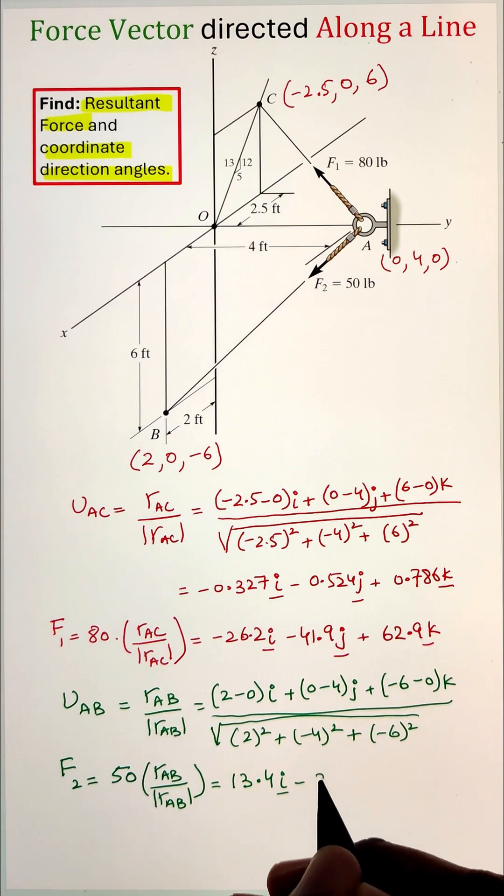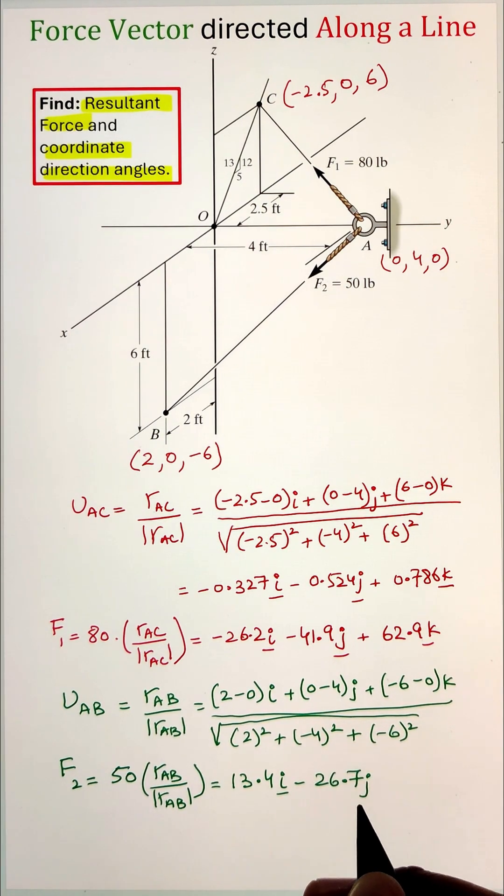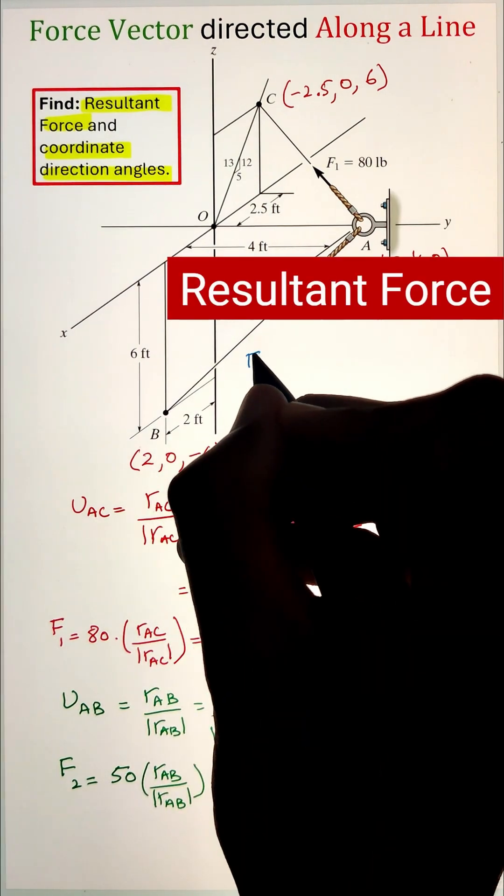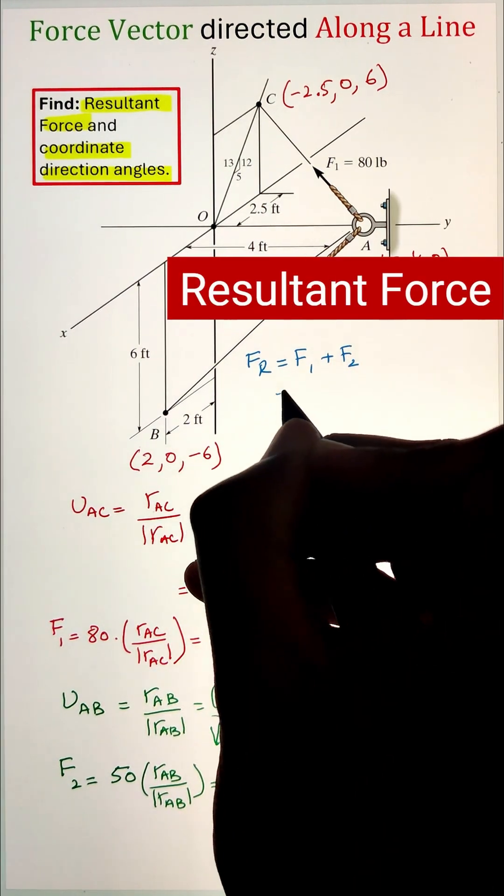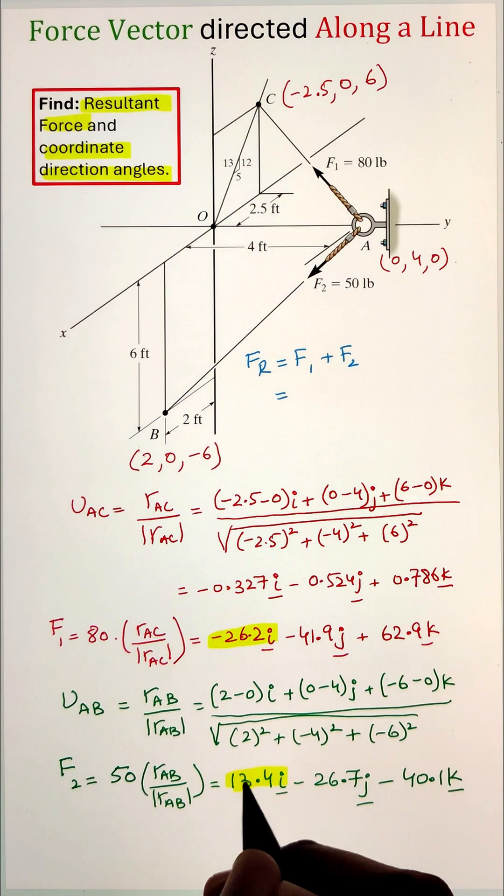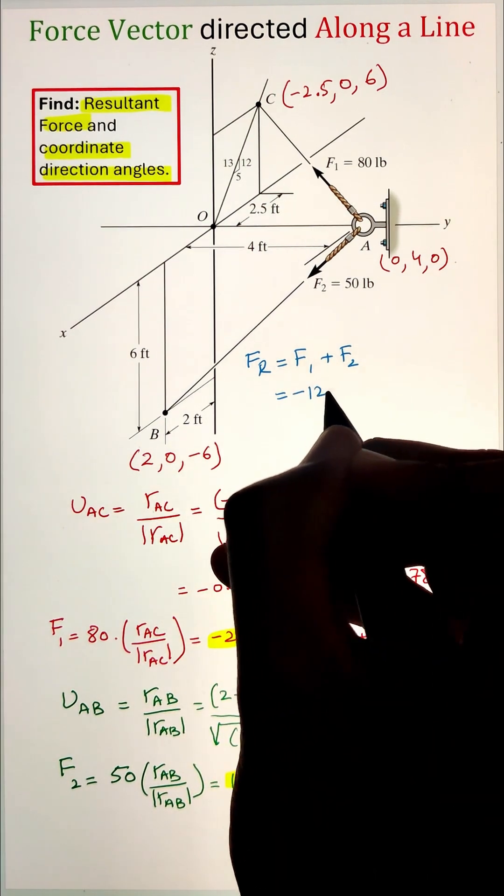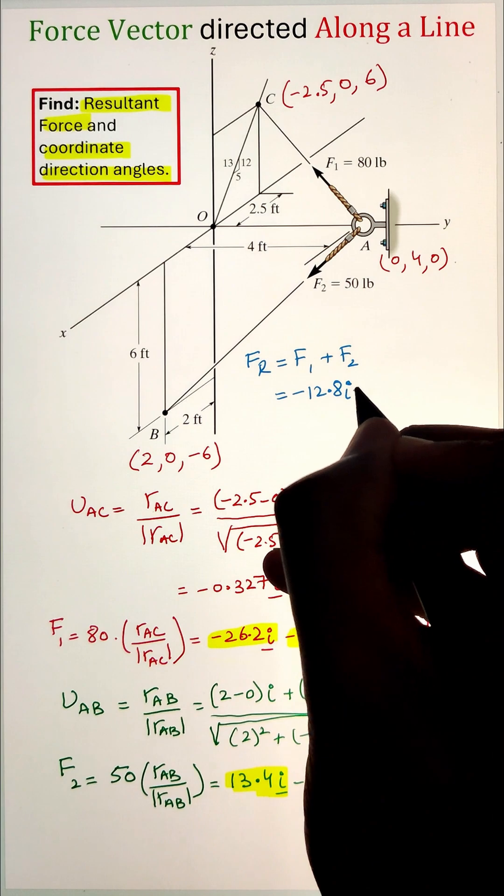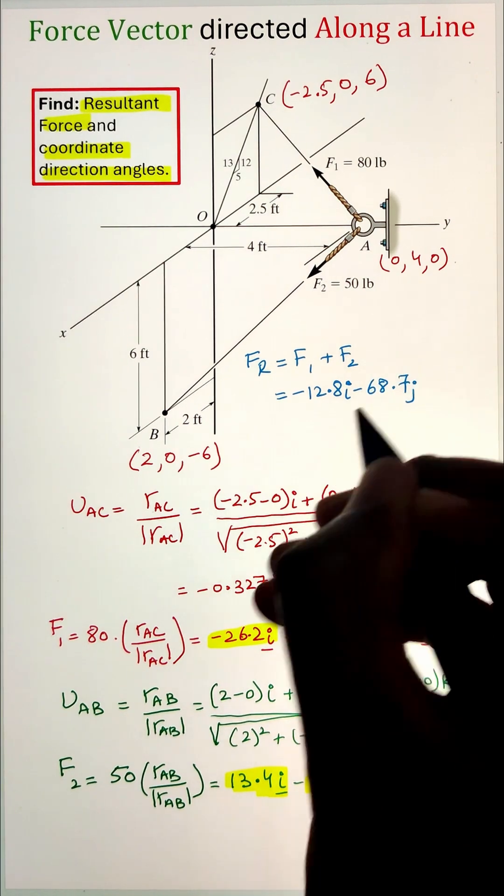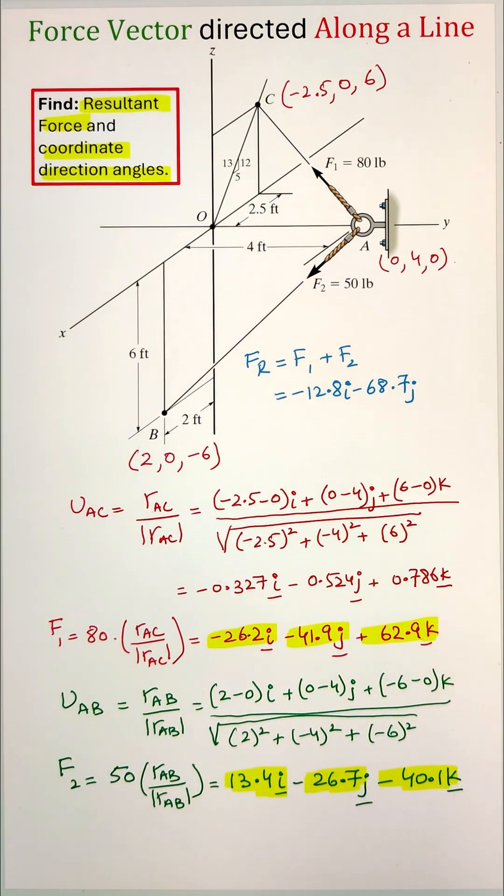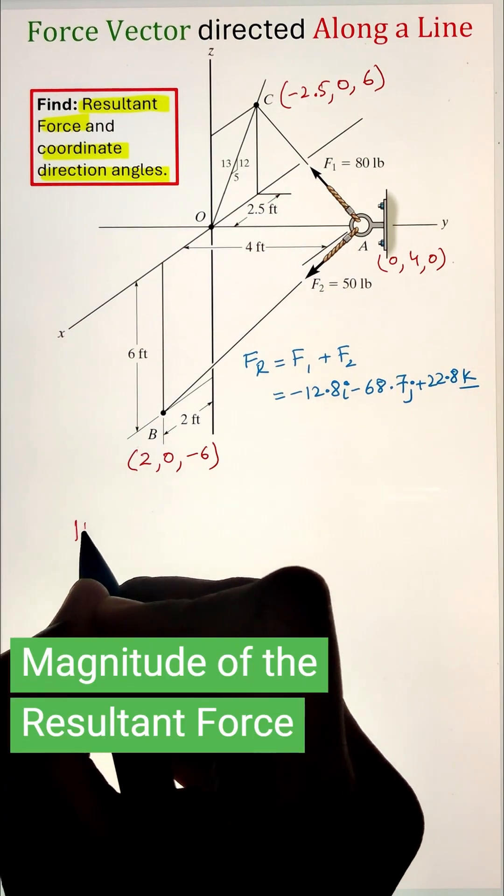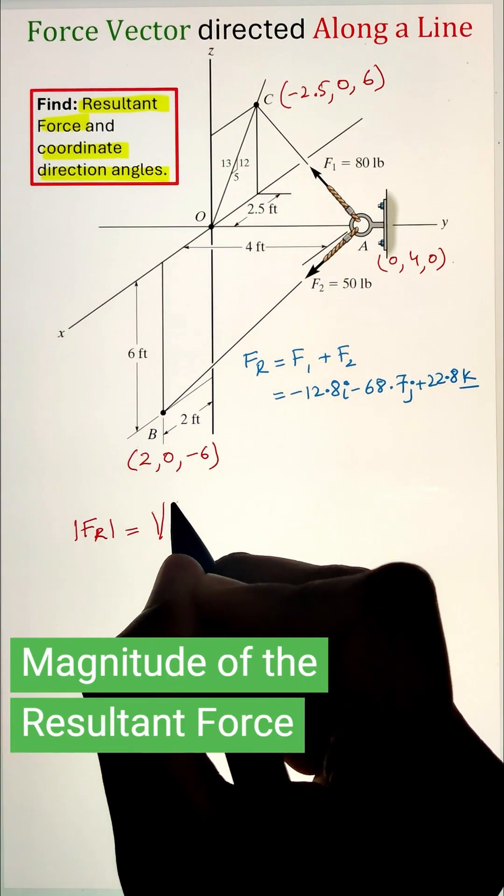Now, once we have both the forces in the Cartesian vector form, we can go ahead and add them together to figure out the resultant force. The I component will be added with the I component, the J component with the J component, and the K component with the K component. So our resultant force is coming as negative 12.8i, negative 68.7j, and 22.8k.